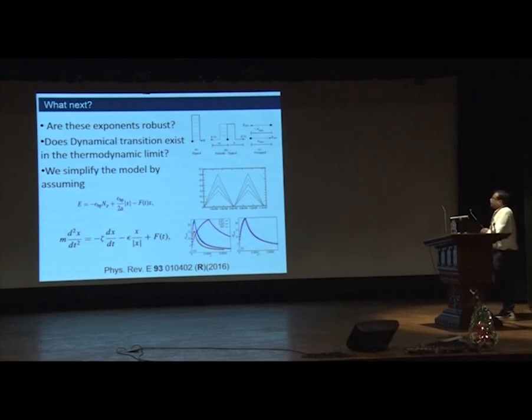The questions now we are going to address are: are these exponents robust, meaning will you see them all the time? Does this dynamical transition exist in the thermodynamic limit?